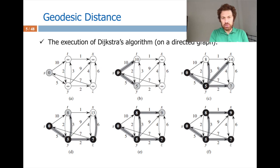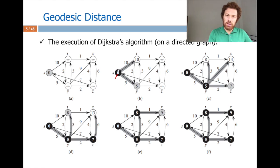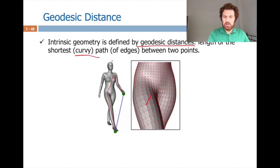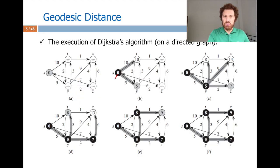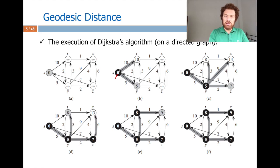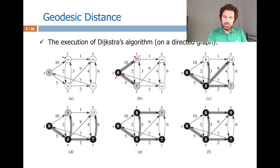I extract the minimum, giving me zero at s. Then I update neighbors: the cost from s is zero, plus the edge weight of 10, giving 10. Since 10 is less than infinity, I update the shortest path length to node t as 10, and record that the previous node of t is s. Similarly, node y gets value 5 (0 plus 5), which is less than infinity. I now have a new min-heap with values 10, 5, infinity, infinity. I select y as the node with minimum value and do the same updating.